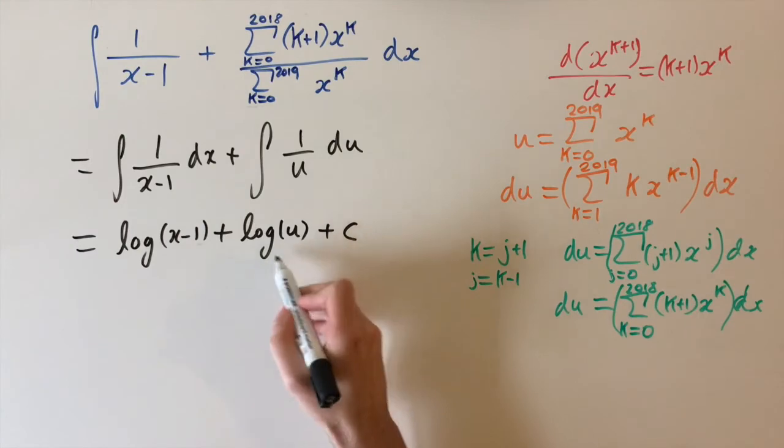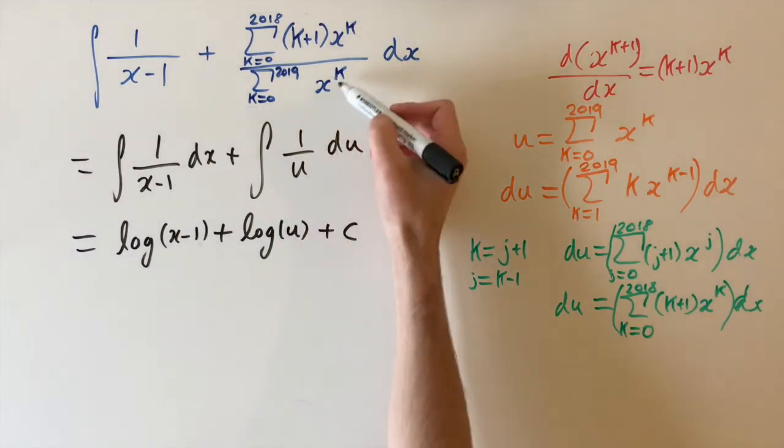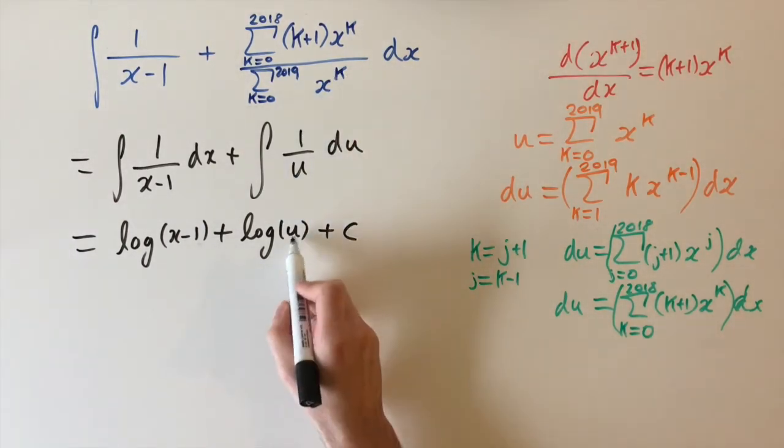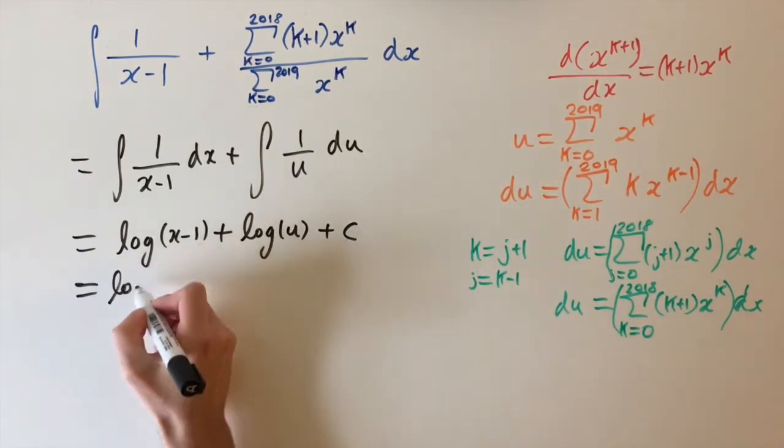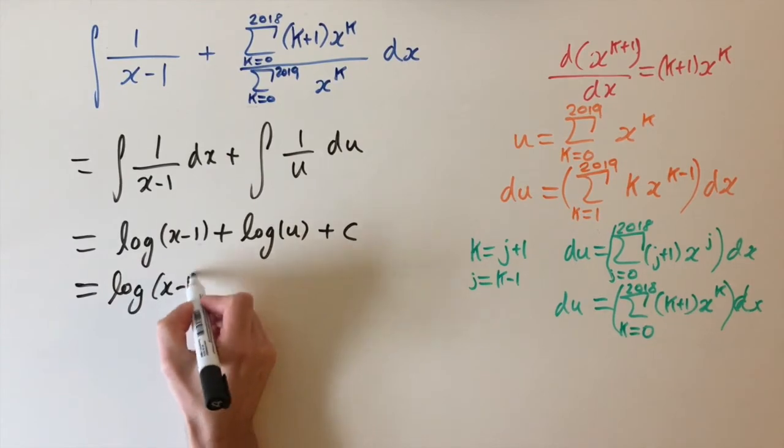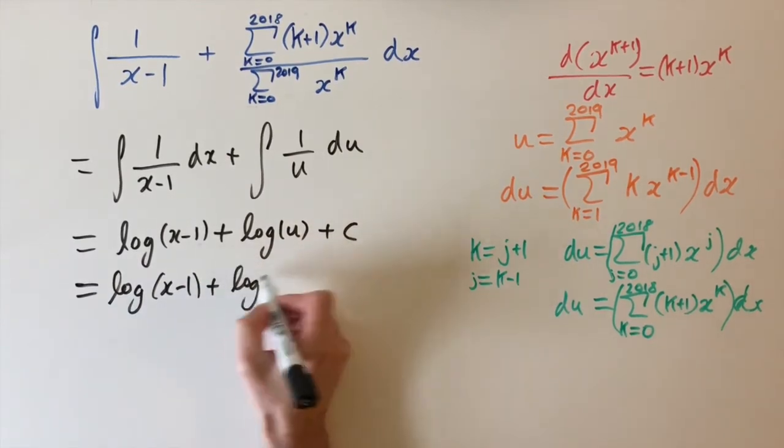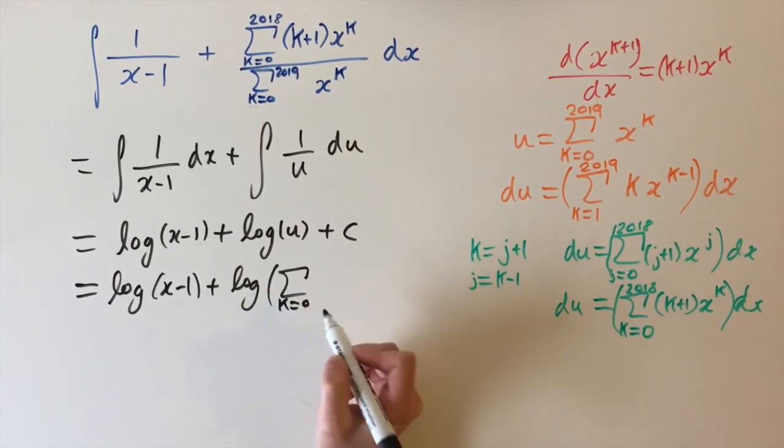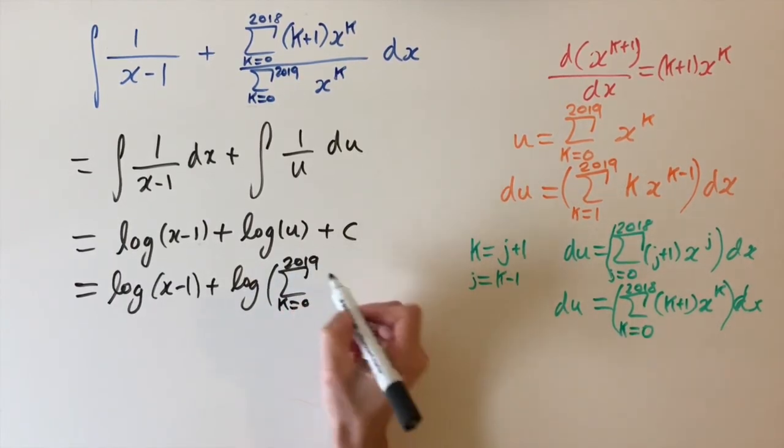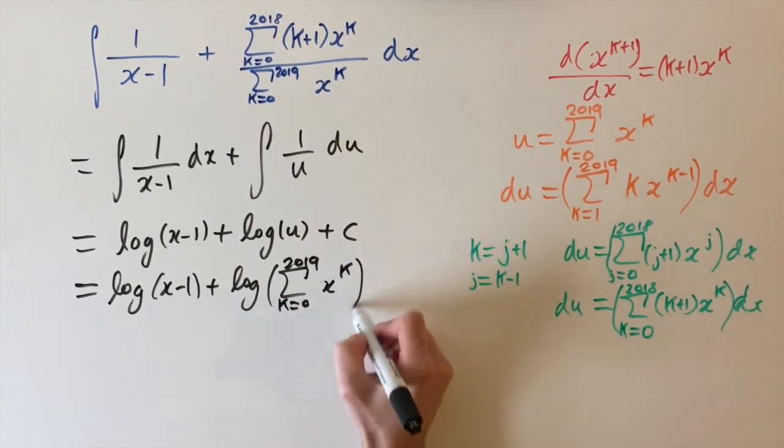And the last step, as always, is to express in terms of our original variable, which is x. So we're just going to put back in what u is in terms of x. So we have log of x minus 1 plus log of this whole series. So k equals 0 up to 2019 of x to the k plus c.